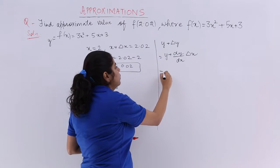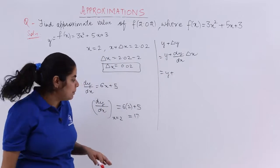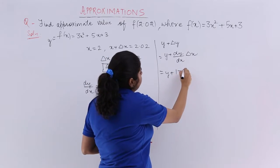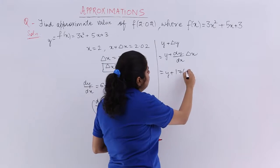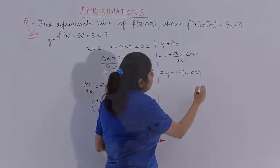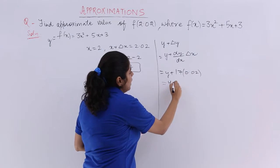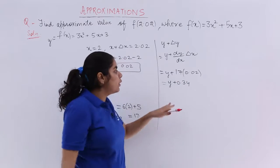And it is equal to y plus dy/dx is 17, multiply by Δx which is the change in the value, that is 0.02. Now it is y + 0.34.